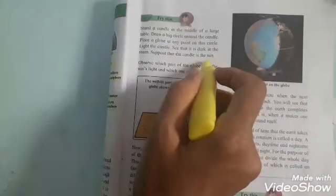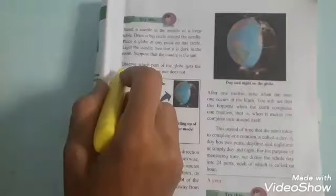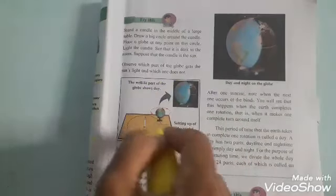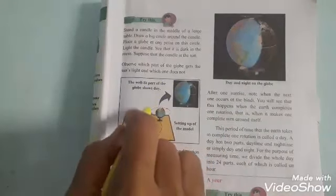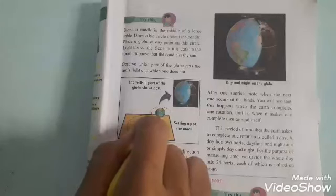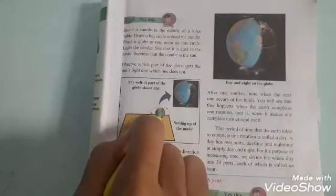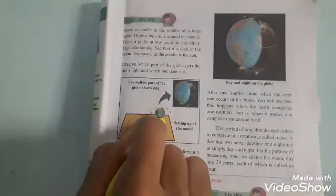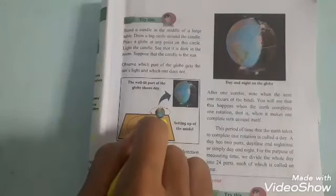So, suppose that the candle is the sun and you have to consider the candle as a sun. Observe which part of the globe gets the sun's light and which one does not. See in this figure it has shown how to arrange the candle, the globe instead of globe. If you don't have globe, you can take ball also. But you have to put ball on one stand.